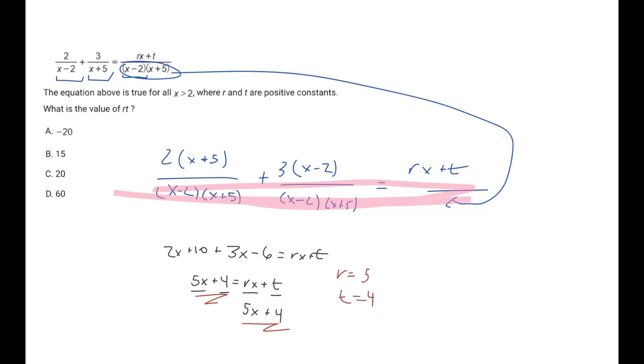And so they want us to find the value of r times t. 5 times 4 is positive 20, and so our answer is C.